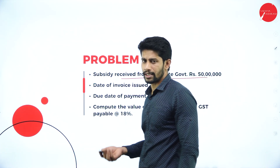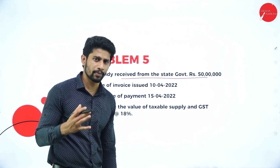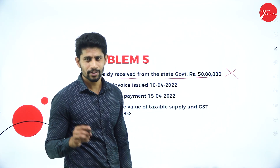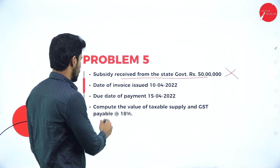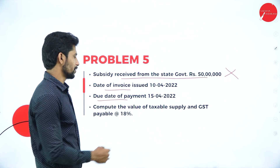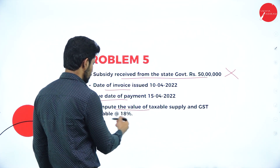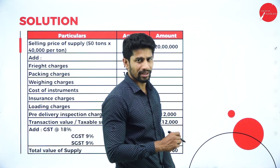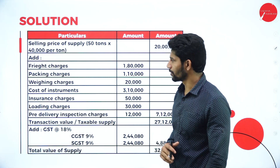Subsidy received from state government: as mentioned earlier, if the subsidy is given by the state government or central government, you are not supposed to add it. You add subsidy only if it is given by a private association, NGO, or private company. The date of invoice is 10th April 2022, and due date for payment is 15th April 2022. Compute the value of taxable supply and GST payable at 18% using the same format — no need to confuse.